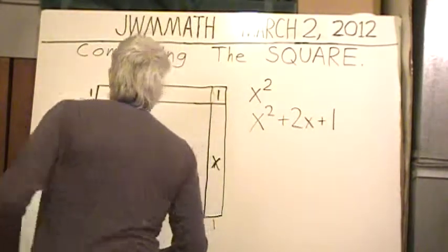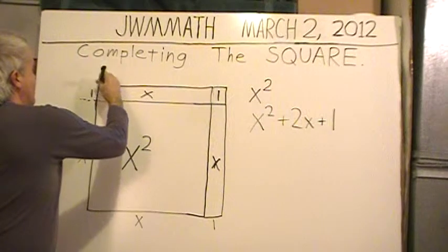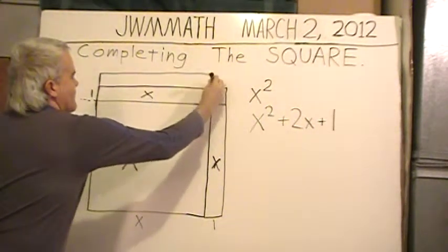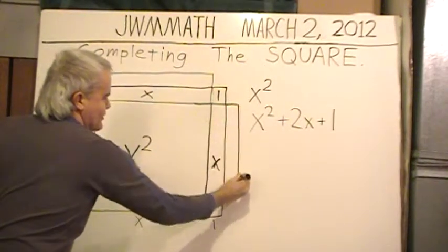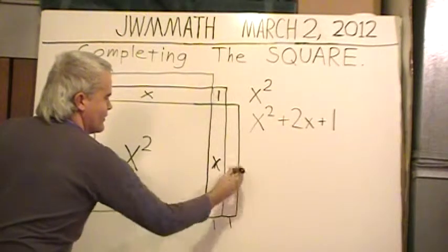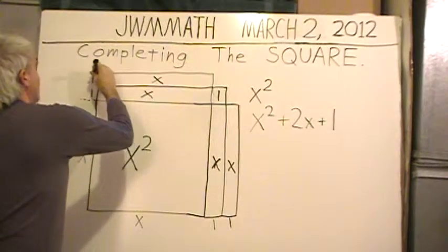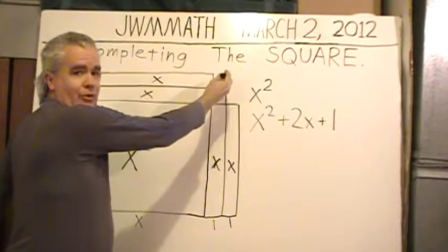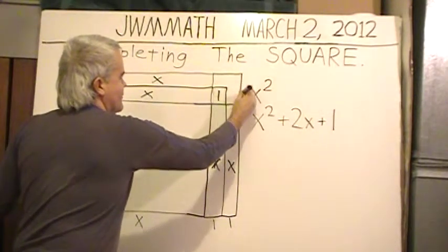So we almost have a larger square. I've just kind of pasted onto the narrow rectangles with the length of x. And the area is 1 times x, which is just x. Length of 1 down here, and that is also an x. So we need to fill in this little corner and complete the square.